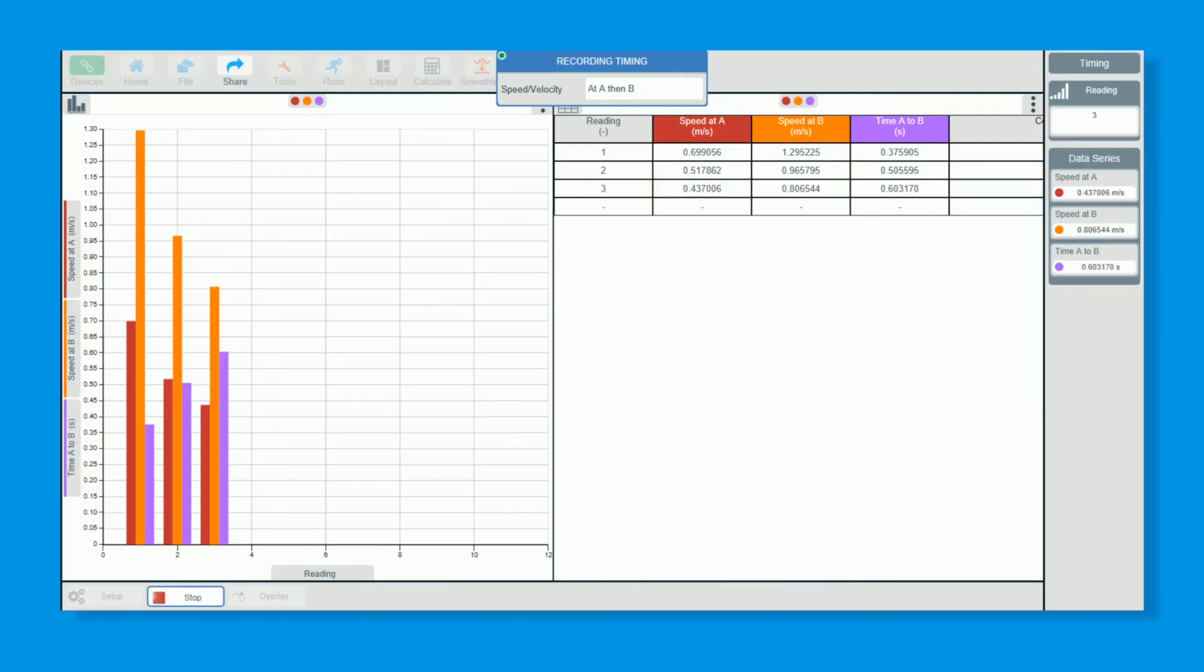You now have your velocity at A then B, time in between. For those three readings with the different masses the students can then work out the acceleration themselves.